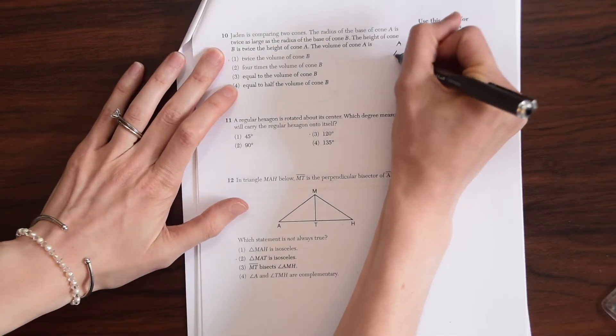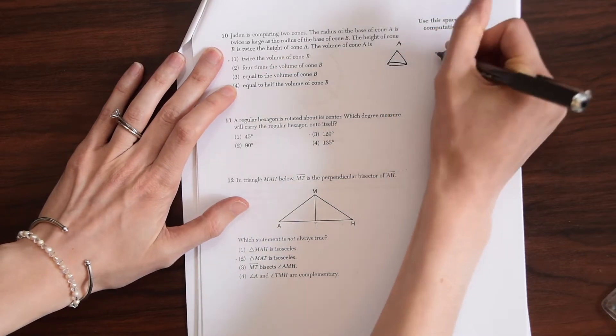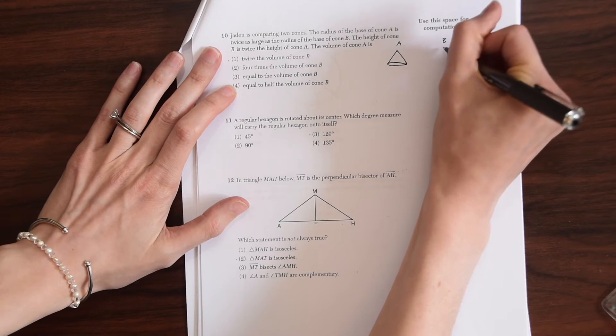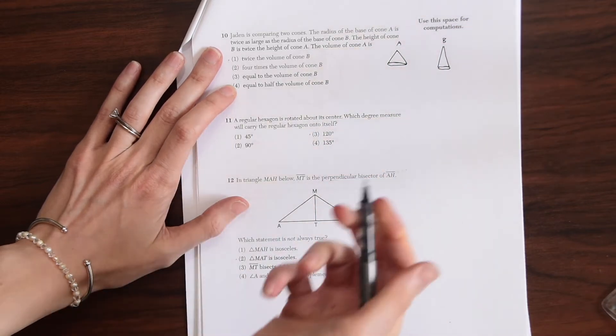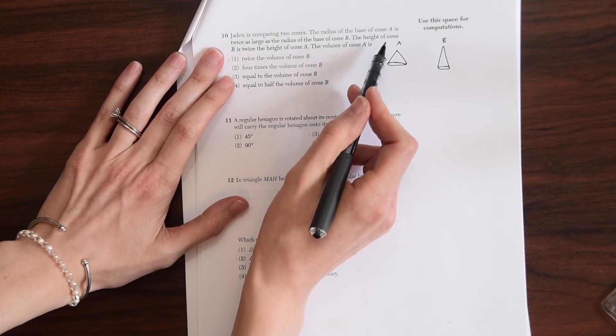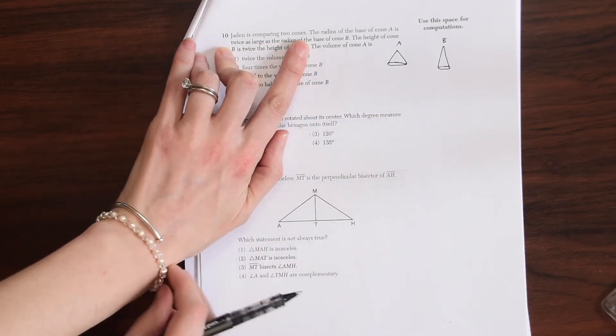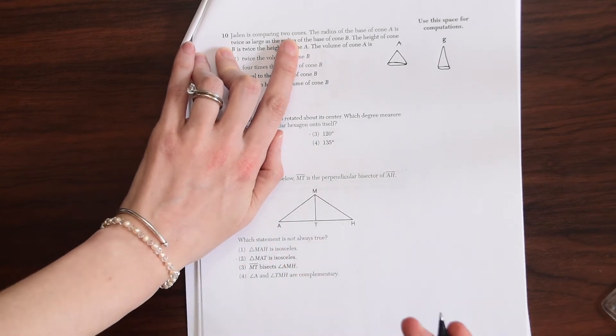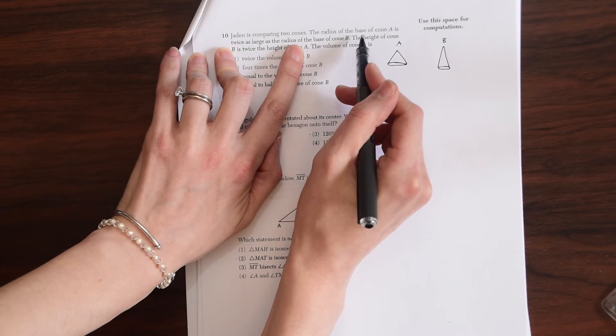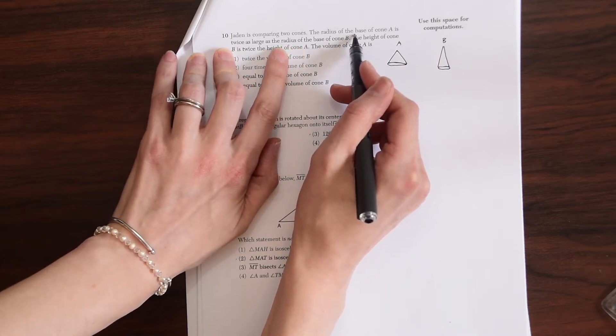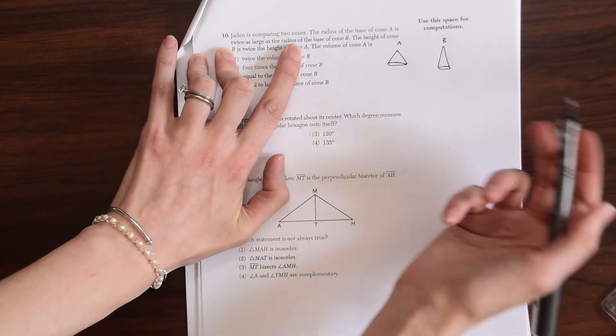So we have cone A. Let's say it looks like this. And then cone B, it sounds like, is taller and has like a smaller radius. So the radius of the base of cone A is twice as large as the radius. So I'm just going to plug in numbers here. So we could do variables X and 2X, but I'm just going to plug in numbers. So these could be anything, but I'm just going to use makeup numbers.